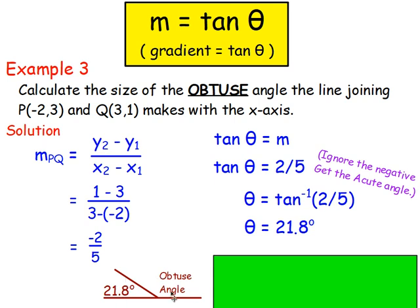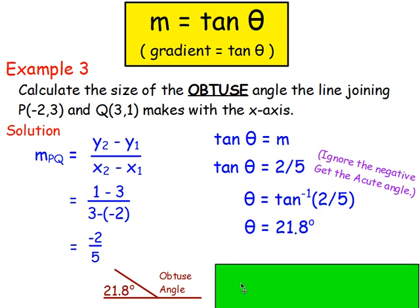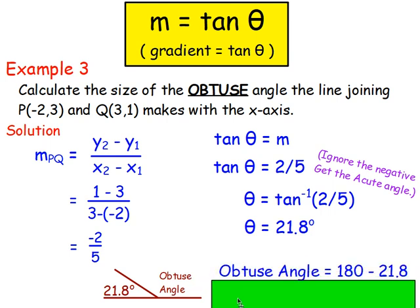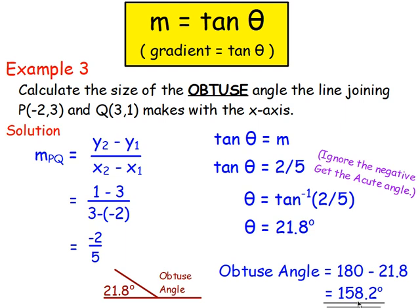We're asked for the obtuse angle. The obtuse angle is 180 minus 21.8, which gives 158.2 degrees.